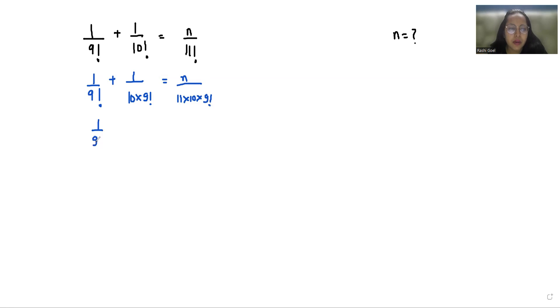If I take 1/9! as common, what is left is 1 + 1/10 = n/(11×10).